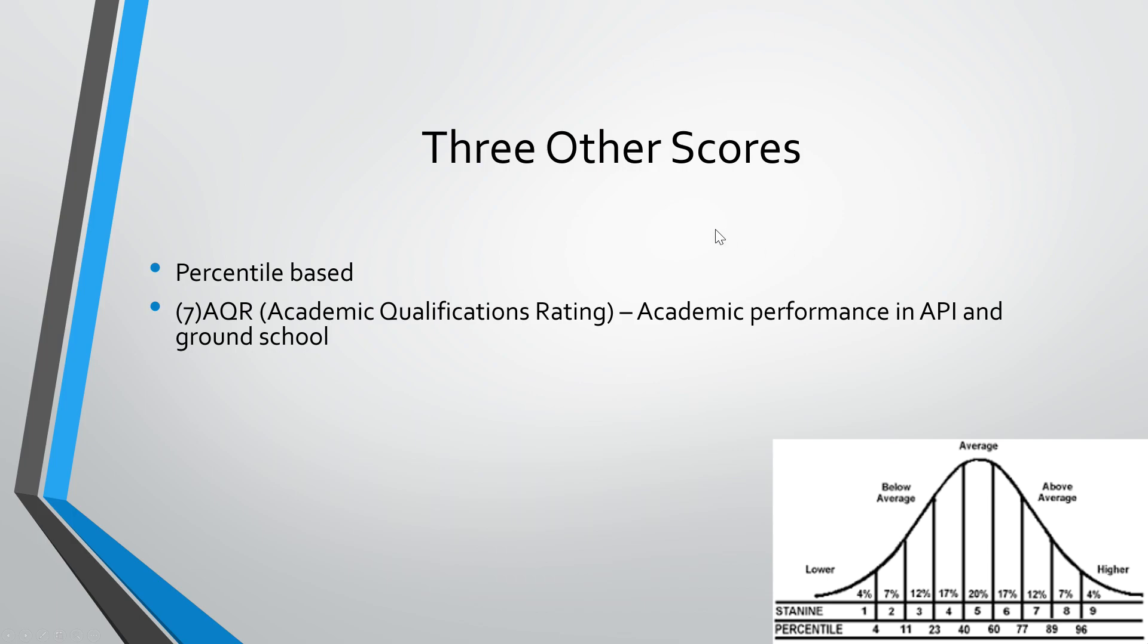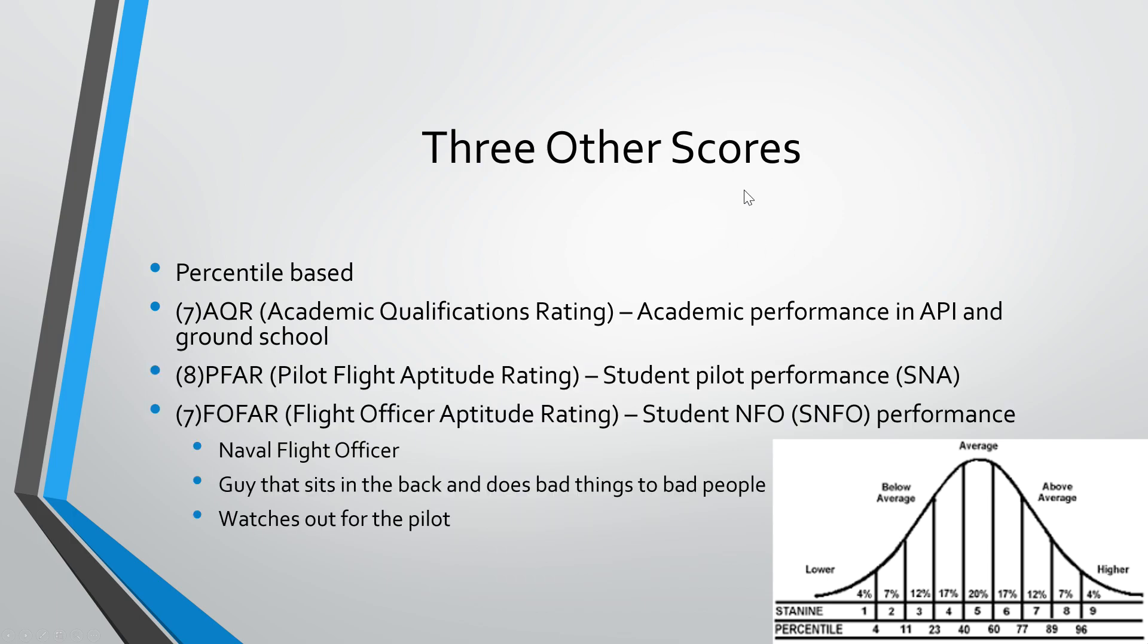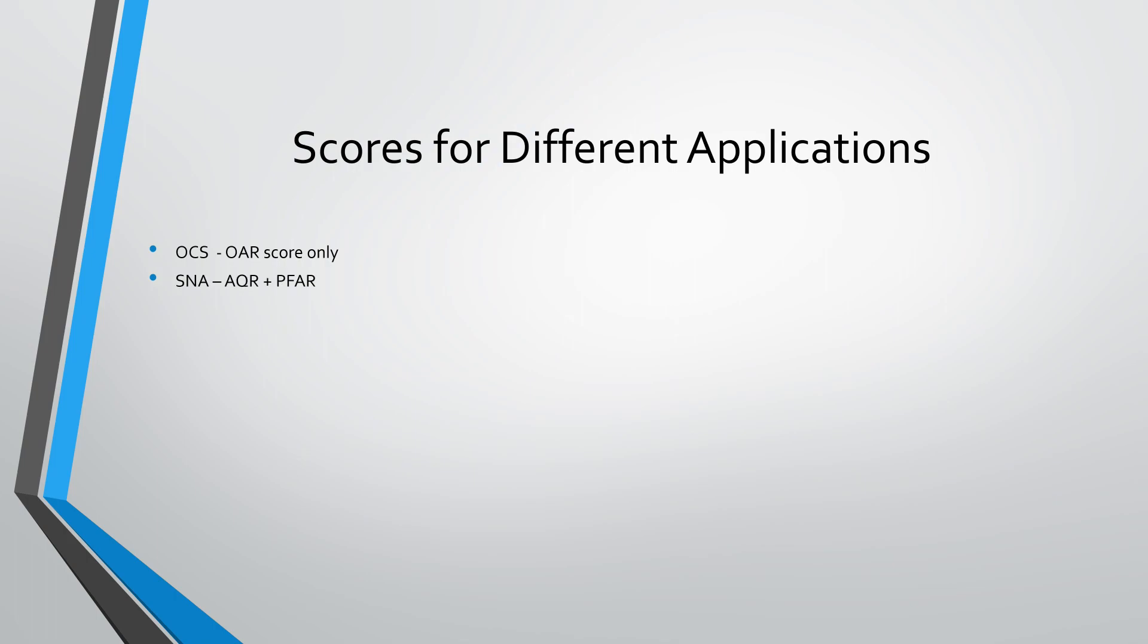So the last three scores you get is your AQR, your PFR, and the FOFAR. So y'all can read all this. I don't need to read it to you, but I got a seven, eight, and a seven on all these things. So I scored fairly high on these. It's mainly due to my previous experience or my experience as a pilot. I have my commercial single, my commercial multi, and then I have all my CFI ratings as well. So it only makes sense that I would do well on the flight portion of things. I'm going to go through the minimum scores that you need for these.